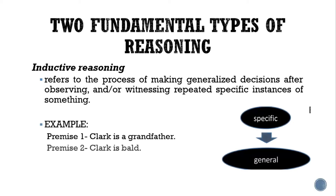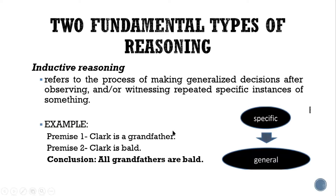Always remember that when we say inductive, it goes from specific to general. For example, premise one: Clark is a grandfather. Premise two: Clark is bald. Conclusion: all grandfathers are bald. From the specific observations in premises one and two, we generalize that all grandfathers are bald — just because of those two observations. So always remember, inductive goes from specific to general.